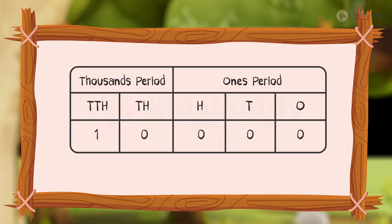Now let us see how these numbers are placed. 5-digit numbers are placed in 2 periods: the thousands period and the ones period. The ones period has 3 places: 1's, 10's, and 100's. The thousands period has 2 places: 1000's and 10,000's. These 2 periods are separated by a comma.